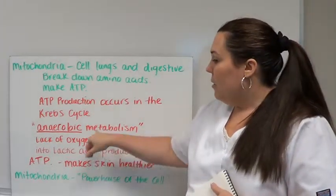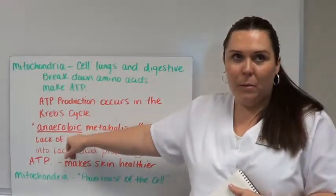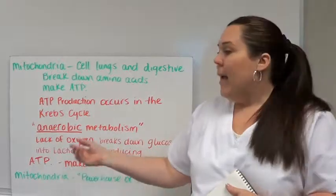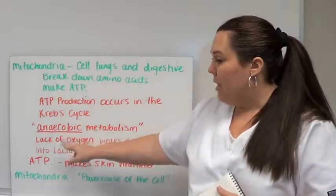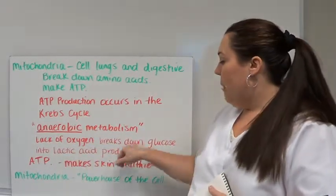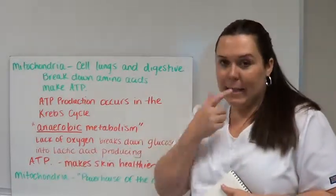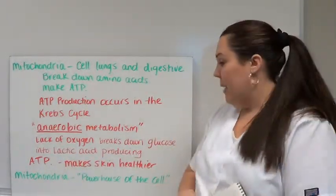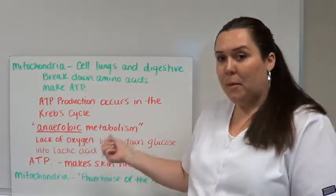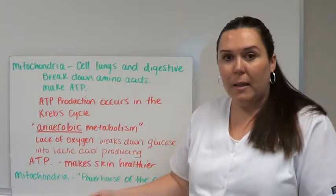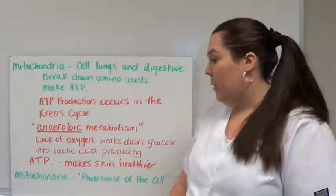The Krebs cycle is responsible for anaerobic metabolism. When we say anaerobic, we're talking about anaerobic bacteria on the skin, cannot exist in the presence of oxygen. The lack of oxygen breaks down glucose into lactic acid, producing ATP. That's good for the skin. It makes skin healthier. We're going to learn skin care treatments that produce ATP and speed up cellular metabolism. That's the whole purpose of doing these skin care treatments.